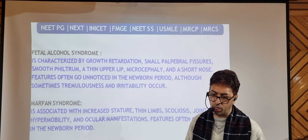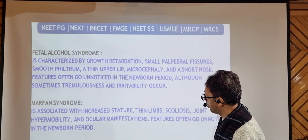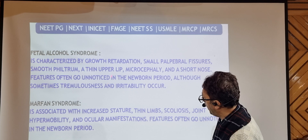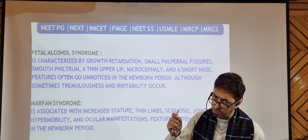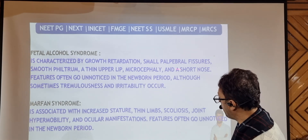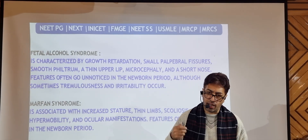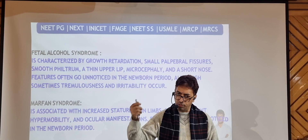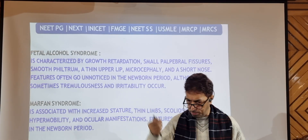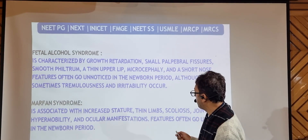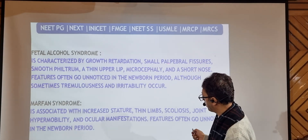Fetal alcohol syndrome is another important entity. Females who are chronic alcoholics and remain pregnant can have infants with fetal alcohol syndrome. Features include growth retardation, small palpebral fissures, smooth philtrum, a thin upper lip, microcephaly, and a short nose. You can be given a clinical scenario of a female who was a smoker or used alcohol and the child presents with these features — recognizing fetal alcohol syndrome from this clinical picture is very important.